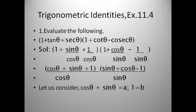Cross-multiplying for the first bracket with LCM cos θ: 1 into cos θ gives cos θ; sin θ over cos θ gives sin θ directly (same denominator); and 1 over cos θ gives 1. So the first bracket becomes (cos θ + sin θ + 1) / cos θ.